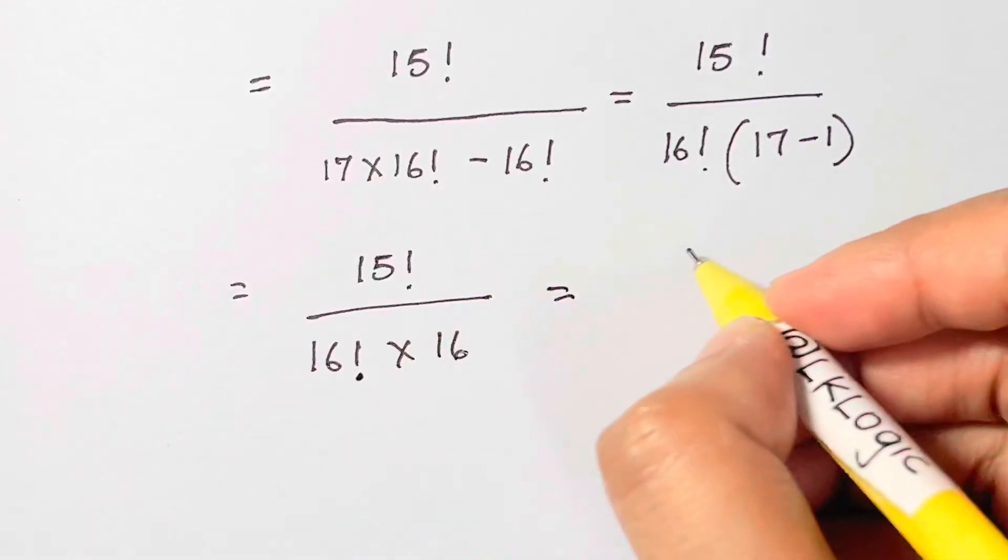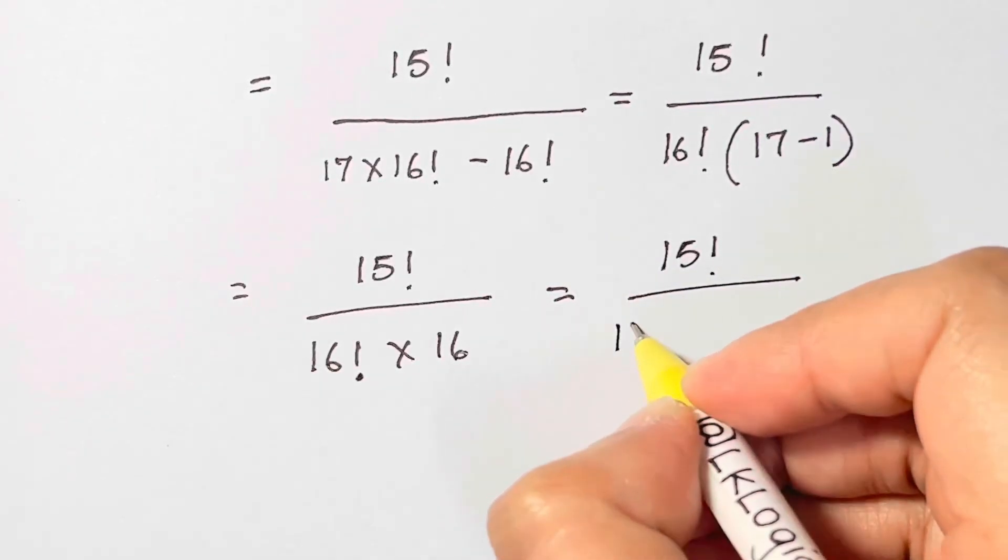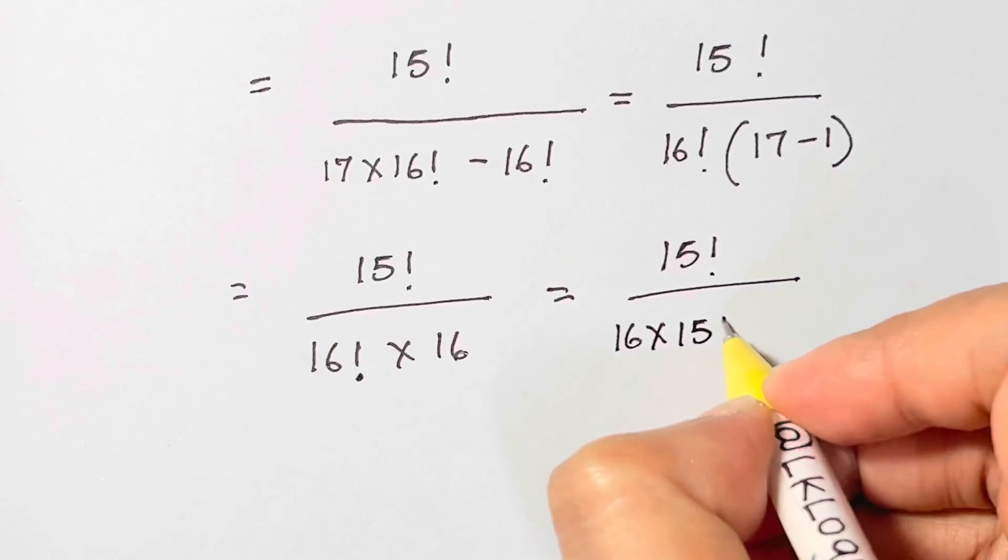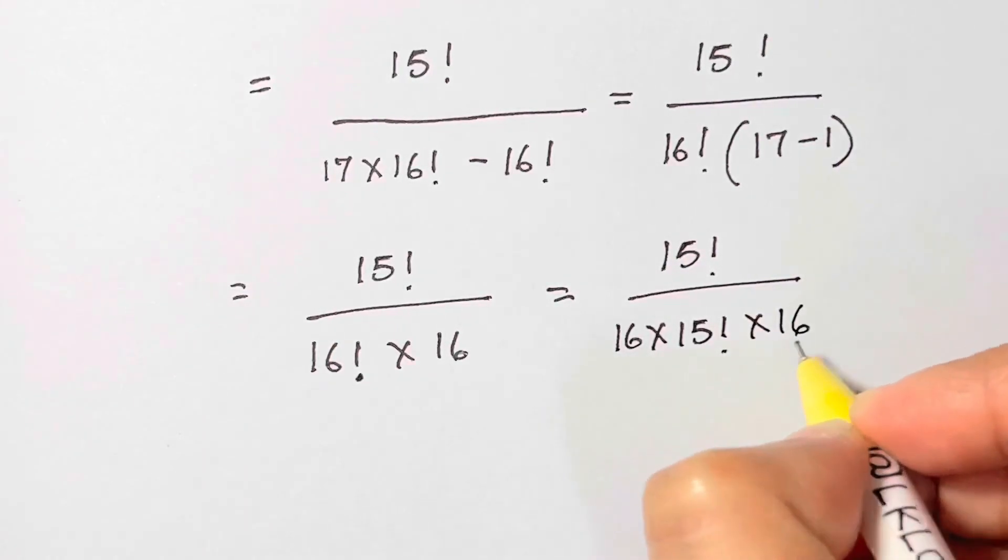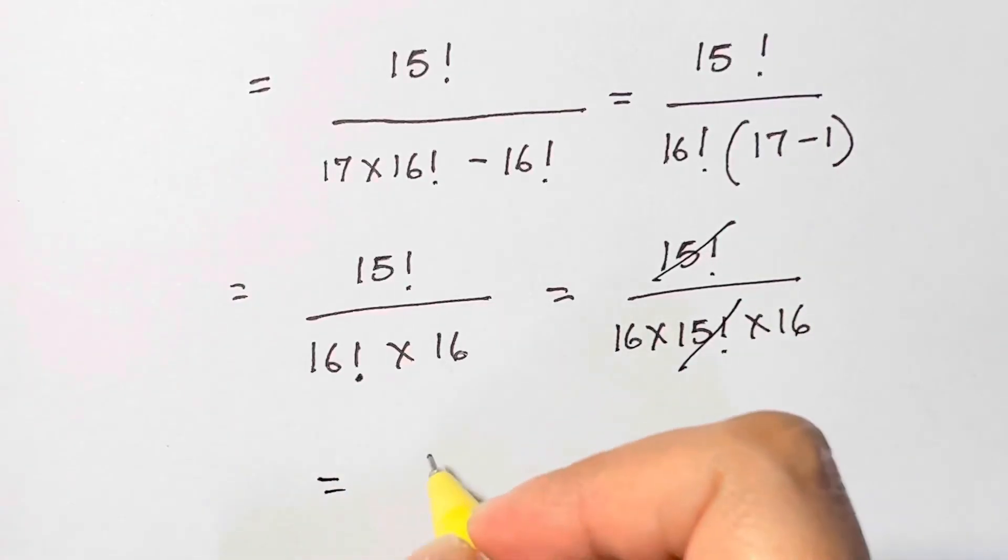What is 16 factorial? 16 times 15 times 14 times and so on. So that is 16 times 15 factorial, times 16. Now I can cross out 15 factorial with 15 factorial, so I'm left with 1 over 16 times 16.